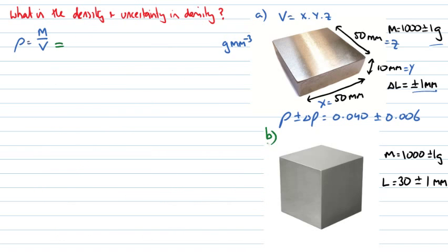For object B, which is the cube, now all three sides are the same, so my volume now is just equal to the length cubed, and we can say that my density is equal to mass divided by L cubed, so we can work out a numerical value for that, so once again it's 1000 grams, divided by now 30 millimeters cubed, and that gives us 0.037037037, but we're going to once again keep only two significant figures.